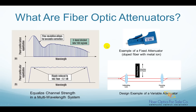Fiber optic attenuators are used in applications where the optical signal is too strong and needs to be reduced. For example, in a multi-wavelength fiber optic system, you need to equalize the optical channel strength so that all the channels have similar power levels. This means to reduce stronger channel powers to match lower power channels.